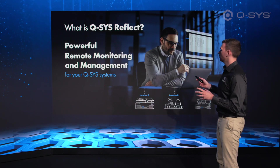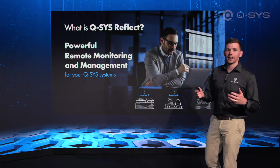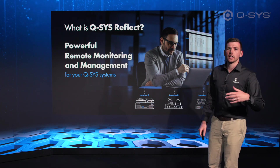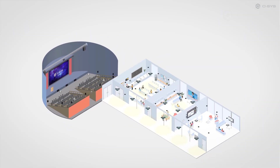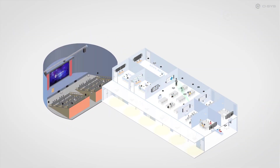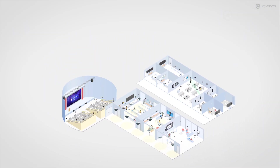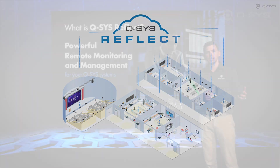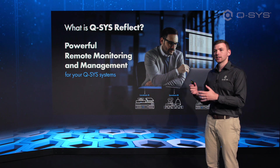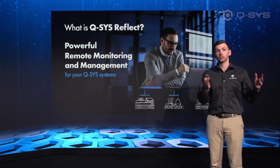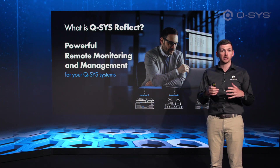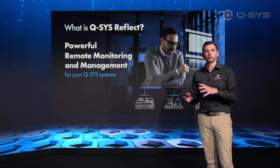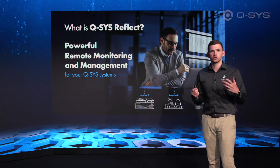Essentially what Reflect allows you to do is use the cloud to access any system that you've been given permission to access. That could be because you're in the AV world and need to make changes or fix a problem, but also many IT departments use the data from Reflect and incorporate it alongside their IT dashboard so they can see IT and AV in the same space. Let's talk about how Reflect really works and what it allows you to do.